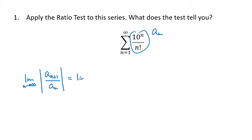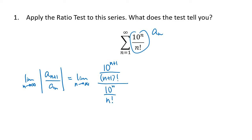So if a_n is 10 to the n divided by n factorial, then a_{n+1} is going to be 10 to the n+1 divided by (n+1) factorial, and a_n is just 10 to the n divided by n factorial. We can drop the absolute value here because nothing in this series is negative.